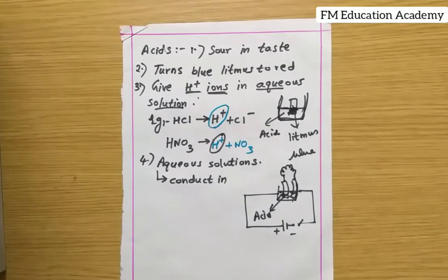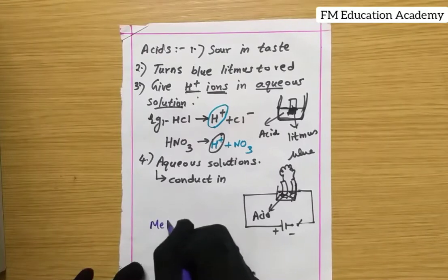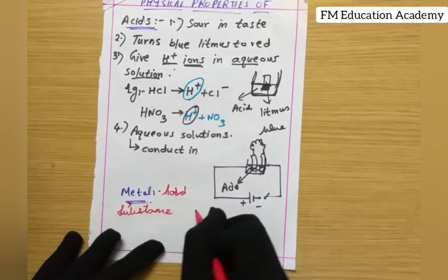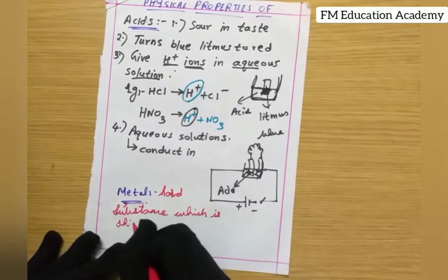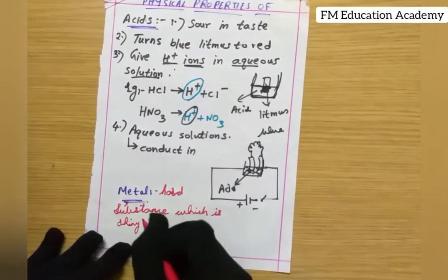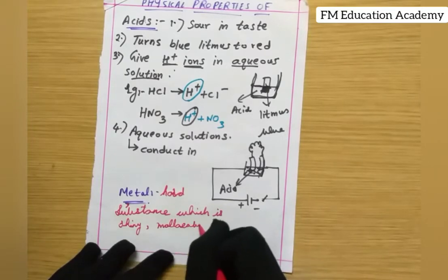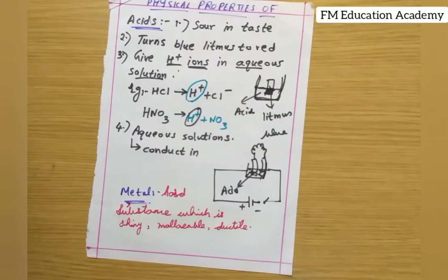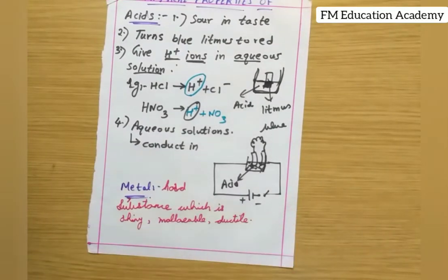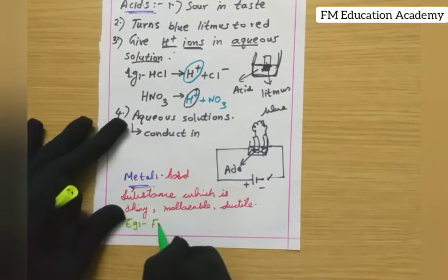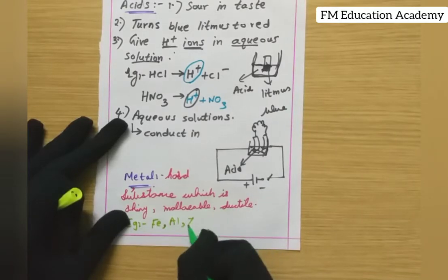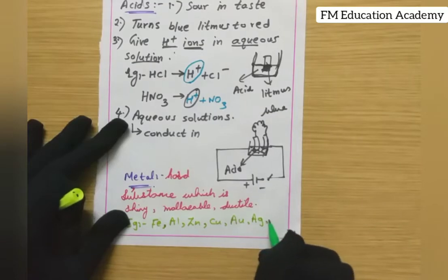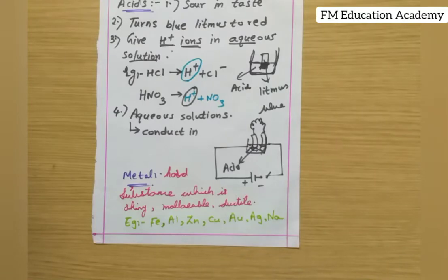First, what is a metal? A metal is a hard, shiny solid. It is malleable — meaning it can be beaten into sheets — and ductile — meaning it can be drawn into wires. Examples of metals are iron (Fe), aluminium (Al), zinc (Zn), copper (Cu), gold (Au), silver (Ag), and sodium (Na).